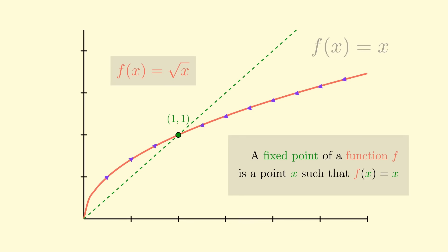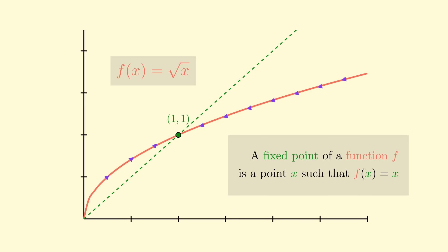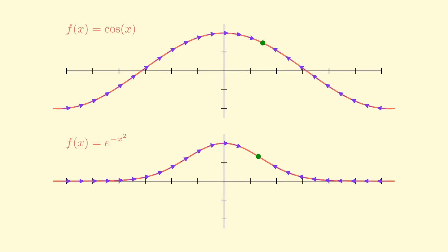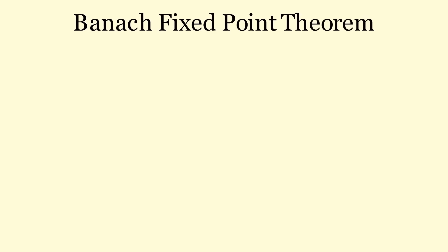What we've just seen is that if you keep taking the square root of any number, you will eventually get the fixed point of the square root function. In fact, this is not unique to the square root function. There's a special class of functions — like cosine of x or e to the negative x squared — where if you keep applying them to any point, you will always end up with the fixed point of those functions. There's actually a theorem about this pattern, and it's called the Banach fixed point theorem, named after the Polish mathematician Banach.